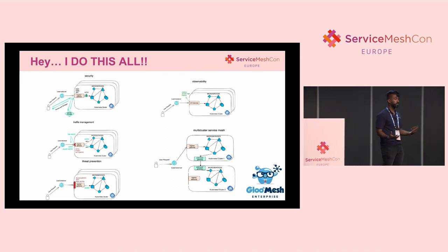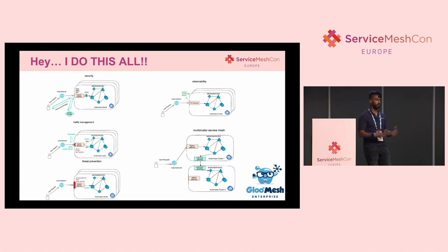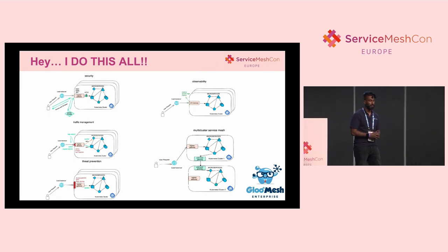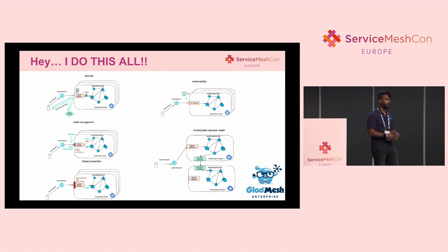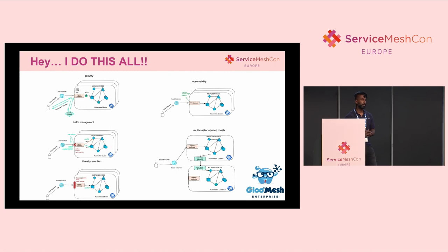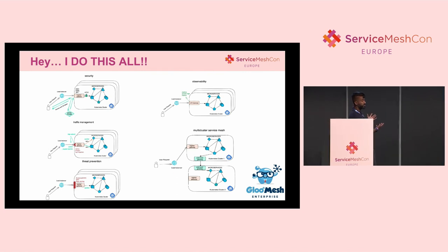Gloo Mesh and Gloo Mesh Gateway are the abstractions that Solo has built on top of Istio and the Istio Ingress gateway, meaning you're managing fewer resources across a larger set of environments — whether it's five Kubernetes clusters or twenty. Gloo Mesh Gateway is the abstraction that consolidates API gateways and service meshes into one and runs it all cleanly. If you want external authorization, rate limiting, OIDC integration, or open policy agent to control object communication, Gloo Mesh and Gloo Mesh Gateway are your answer.